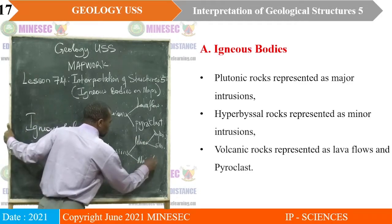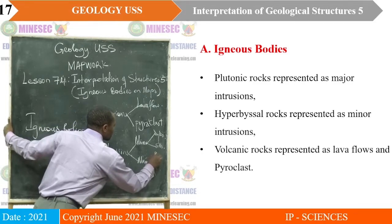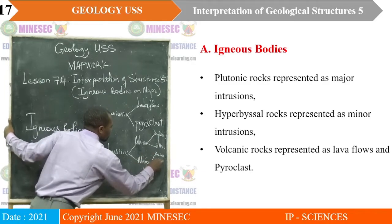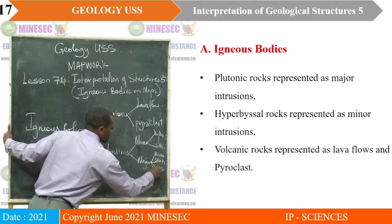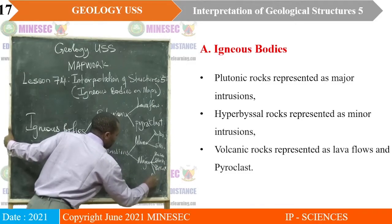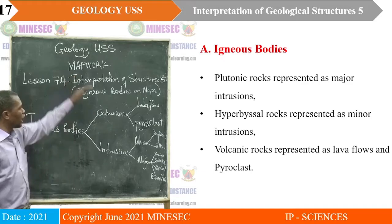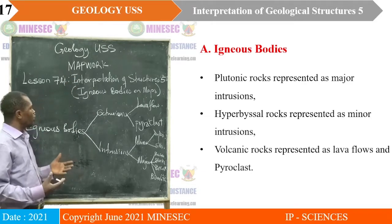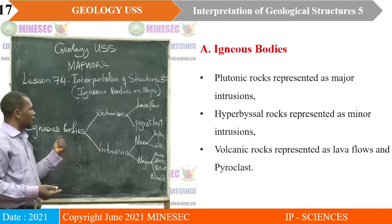Major intrusions are partitioned into four: you have bosses, stocks, batholiths, and laccoliths. That is how igneous bodies are broadly classified and visualized on a map.